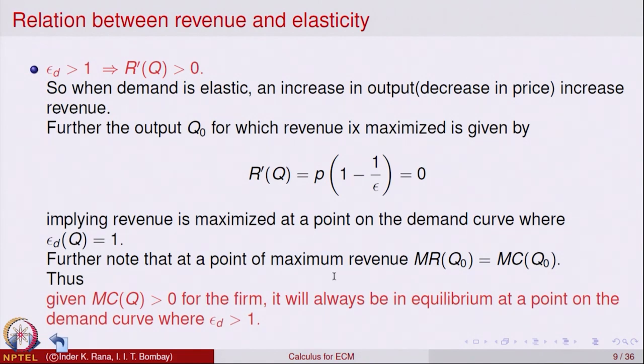To summarize today's lecture: we looked at examples and relations between various economic quantities. First, we emphasized the caution that one must ascertain there is a point of maxima for the profit or revenue function before asserting that marginal of revenue equals marginal of cost at that point. We then examined the relation between elasticity and revenue. We will continue this analysis in the next lecture. Thank you.